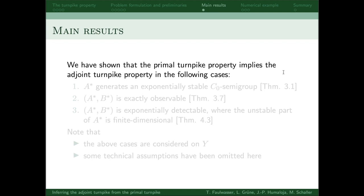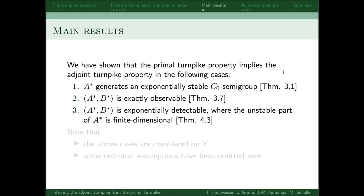The primal turnpike implies the adjoint turnpike in the following cases. When the adjoint of A generates an exponentially stable semi-group, when the pair A-adjoint B-adjoint is exactly observable, and when the pair A-adjoint B-adjoint is exponentially detectable, where the unstable part of A-adjoint is finite dimensional.